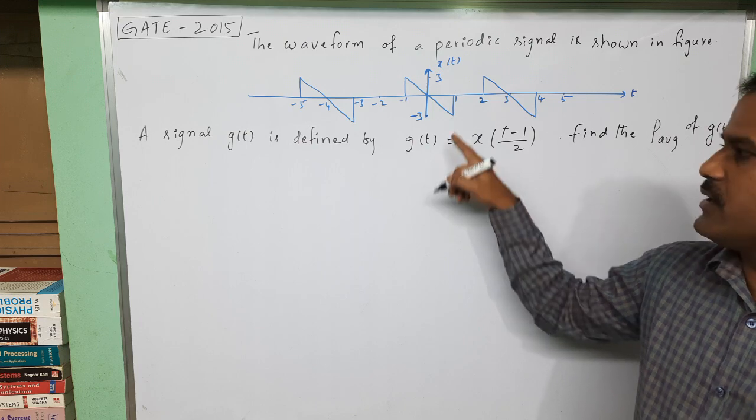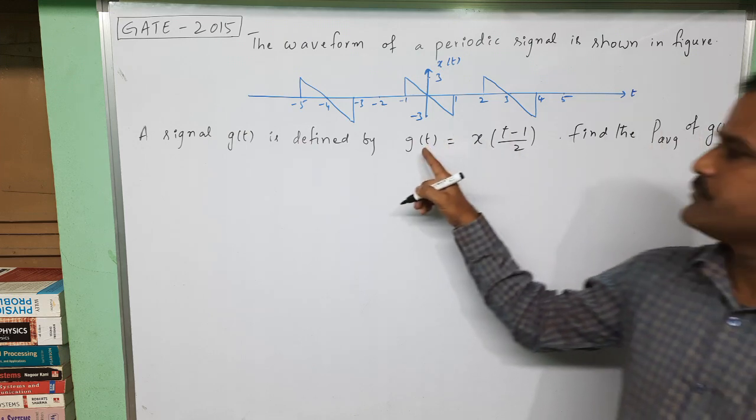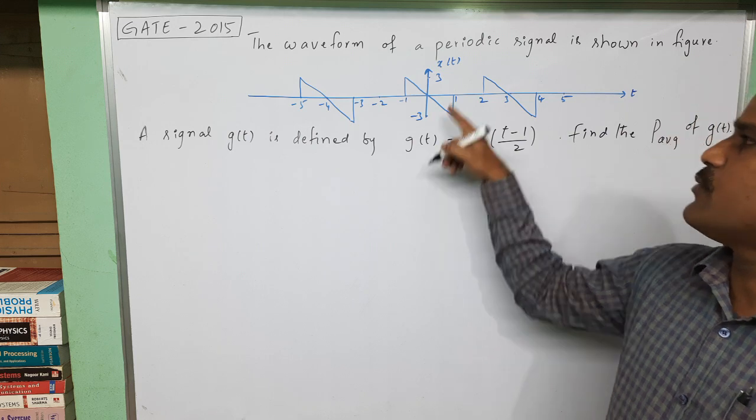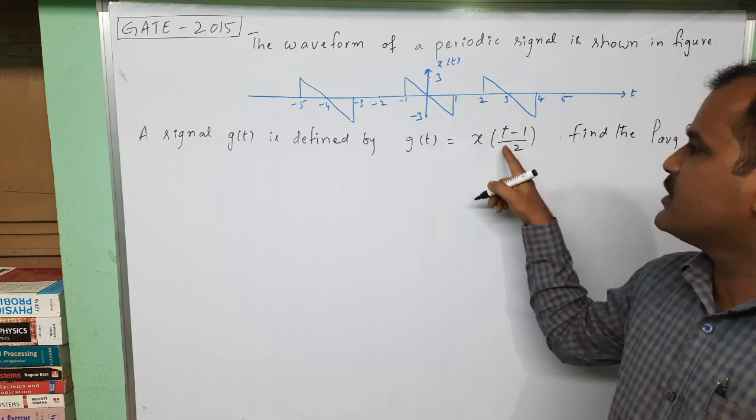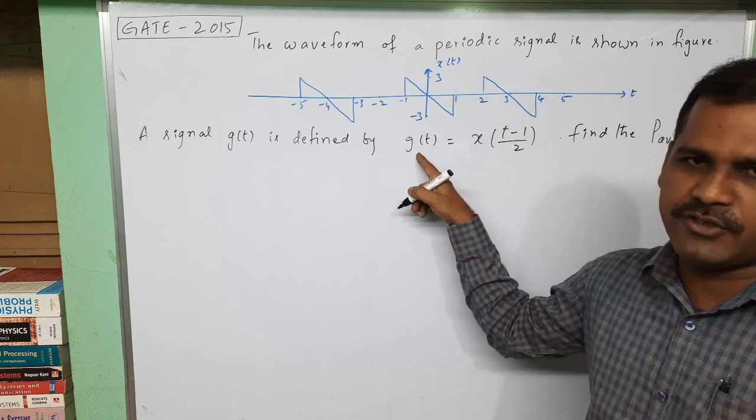So we need to find the power of g(t). That means first we need to find the power of x(t), and from this relation we can find the power of g(t).